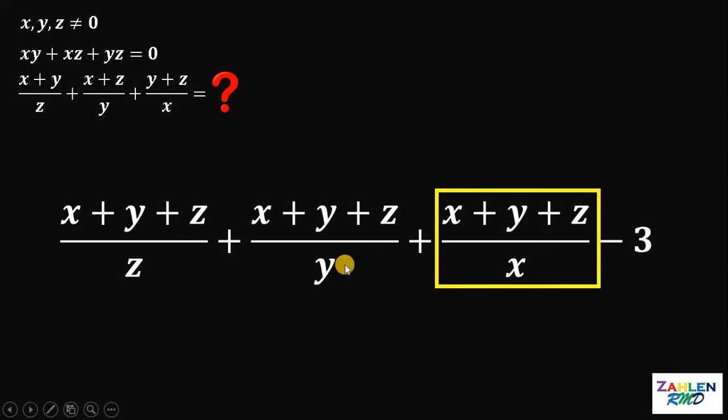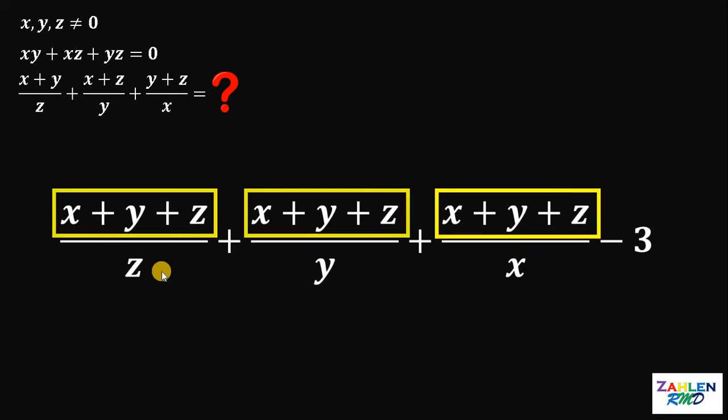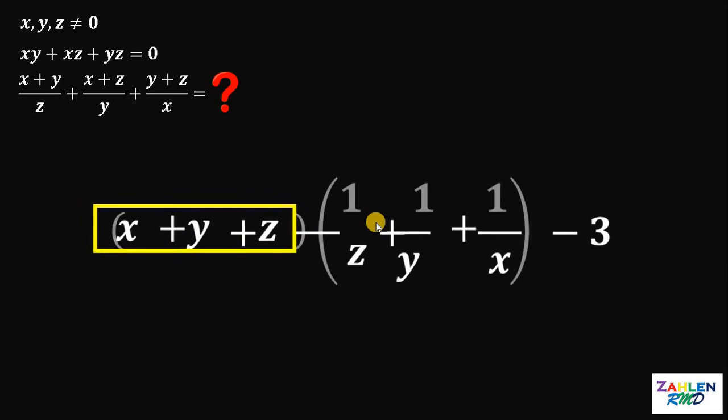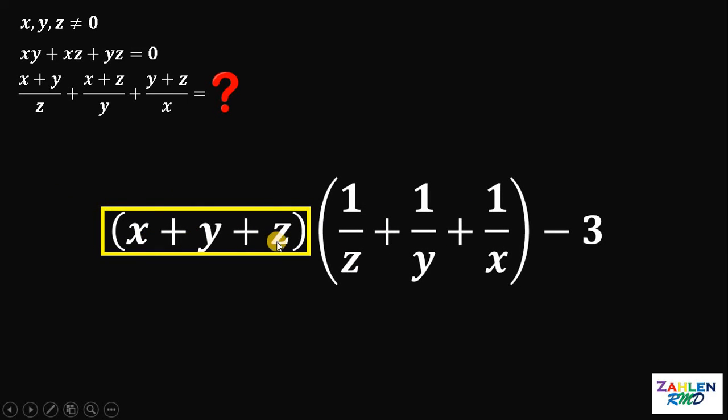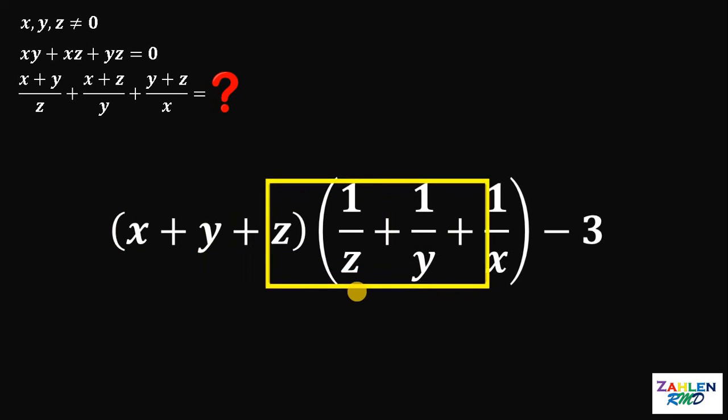Now, notice that we have the same numerator now. So what we're going to do is to factor out x plus y plus z like this. So we have x plus y plus z multiplied by 1 over z plus 1 over y plus 1 over x. Now, at this point, let's focus on this factor.